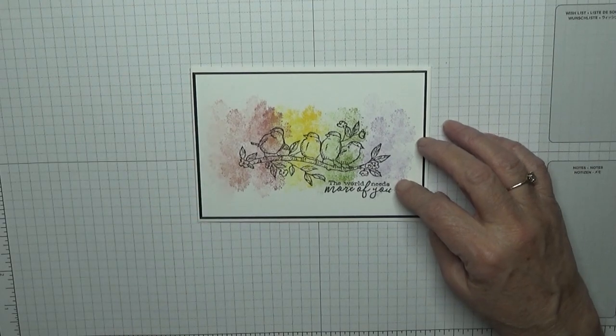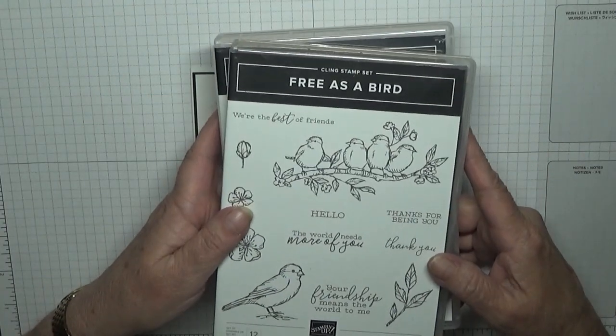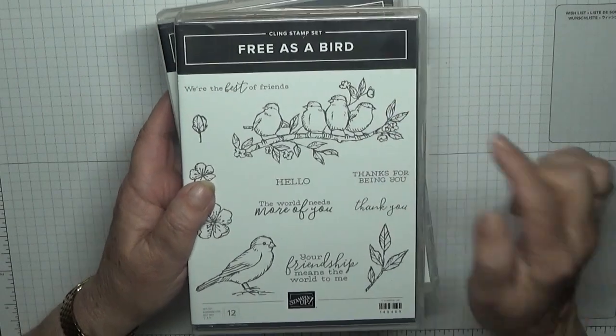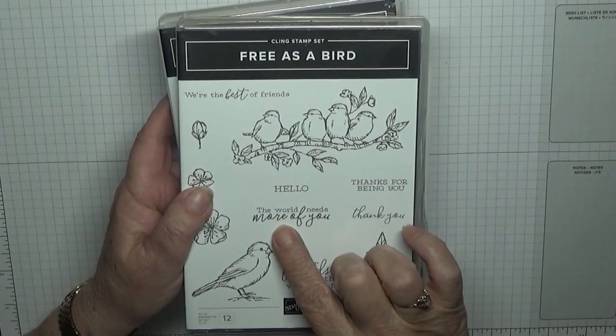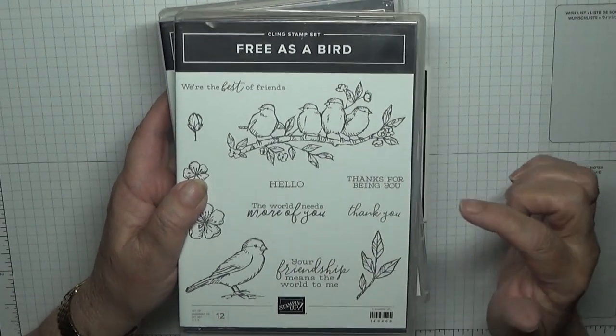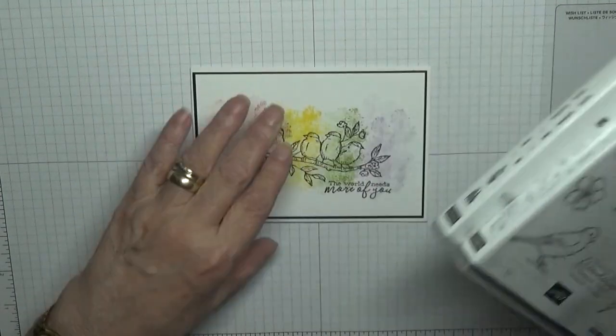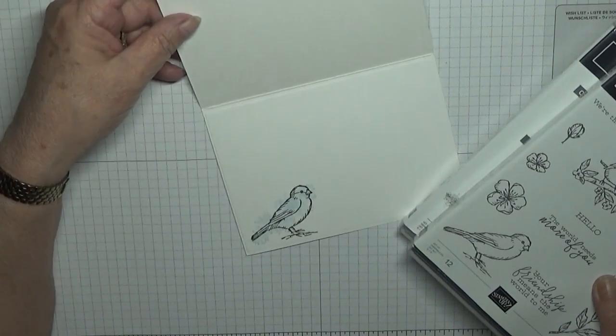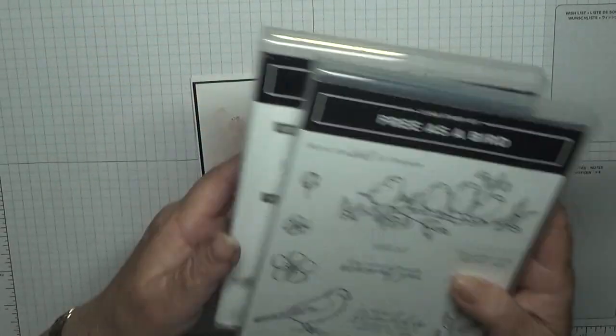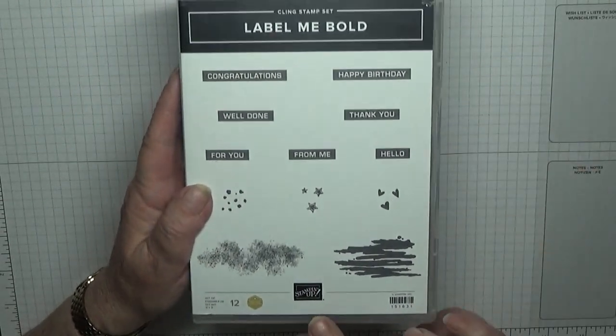To make this card, I use the stamp set Free as a Bird and we're using that image 'the world needs more of you' and 'thank you', and this bird because I popped him inside.